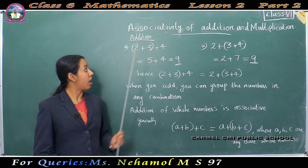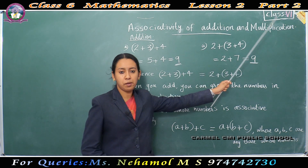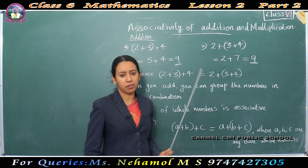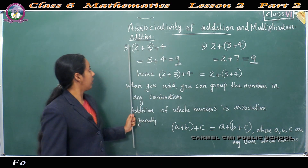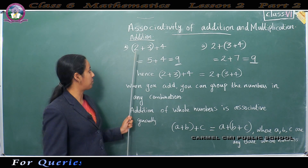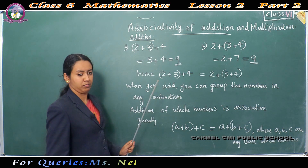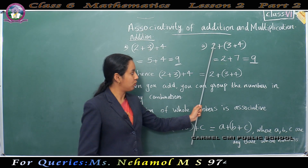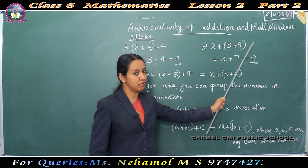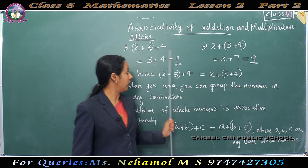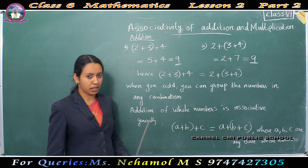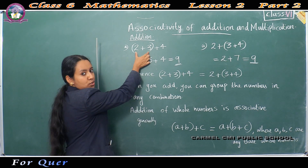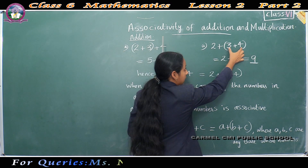Next topic: associativity of addition and multiplication. First, we consider addition. Consider the example 2 plus 3 plus 4. The numbers are the same, but the order is different. Here we group the first two numbers together — 2 plus 3 — then add 6. And here we group 3 and 4 together.